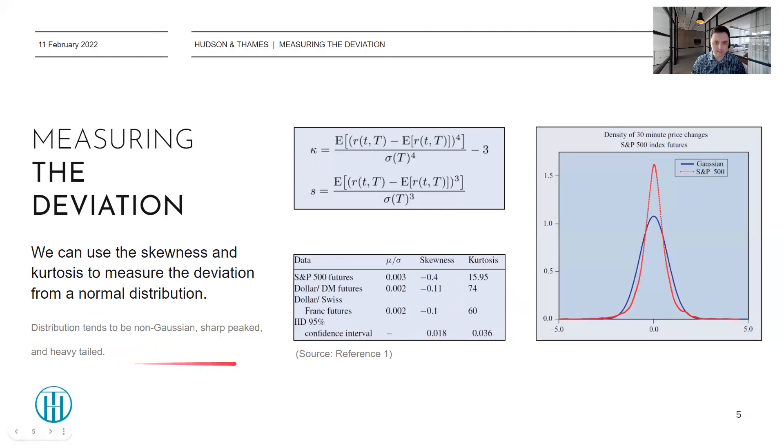So the distribution tends to be non-Gaussian, sharp-peaked, and heavy-tailed, which I present in an example here on the right-hand side, also from Rama's paper. The blue curve is a Gaussian curve, and the red curve is the density of 30-minute price changes for S&P 500 index futures. You can see it is clearly very sharply peaked with heavy tails in comparison to the Gaussian distribution.